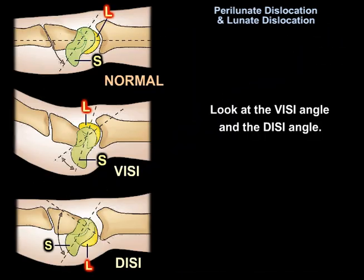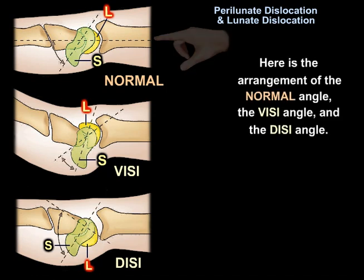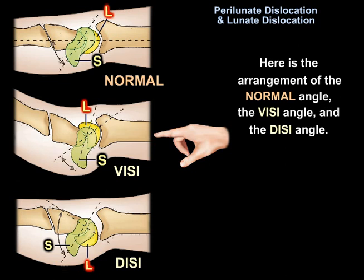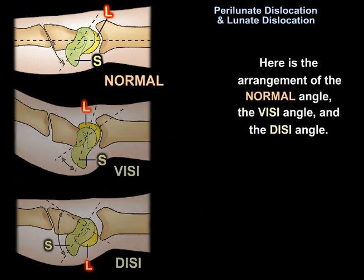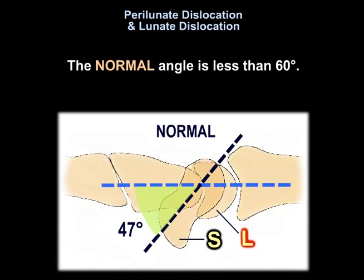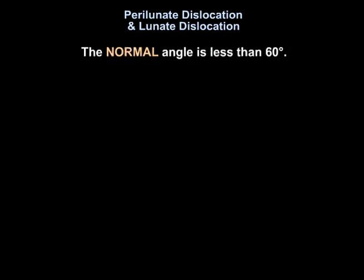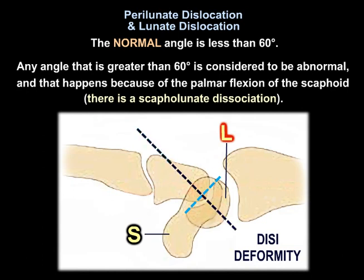Look at the SL angle. Here is the arrangement of the normal angle — the DISI angle and the SL angle. The normal angle is less than 60 degrees; the scapholunate angle is usually about 47 degrees. Any angle greater than 60 degrees is considered abnormal, and that happens because of the palmar flexion of the scaphoid — meaning there is scapholunate dissociation. It is a DISI pattern.